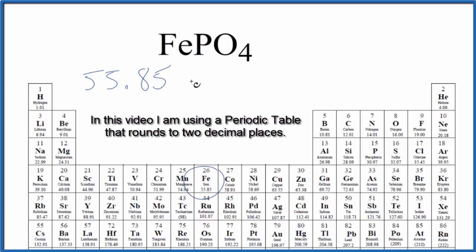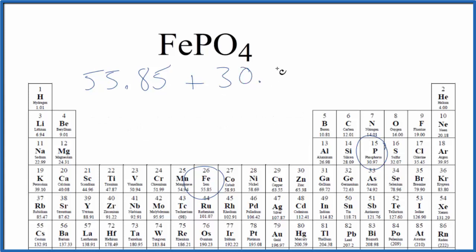We have one iron atom plus phosphorus, which is 30.97. We have one phosphorus atom and oxygen, 16.00 grams per mole. We have four oxygen atoms, so we're going to multiply this by four.